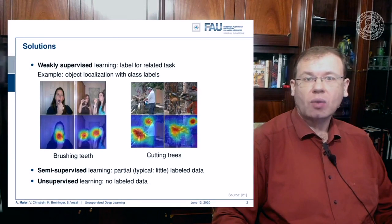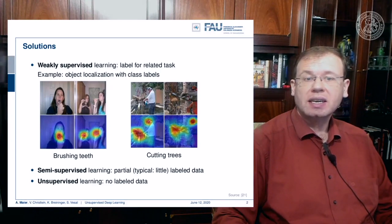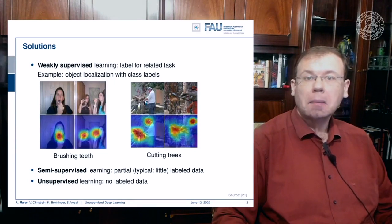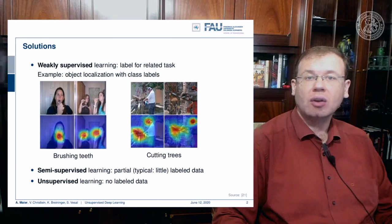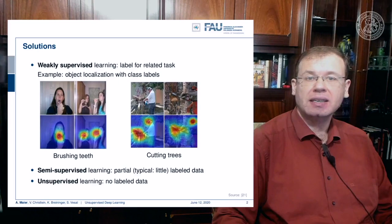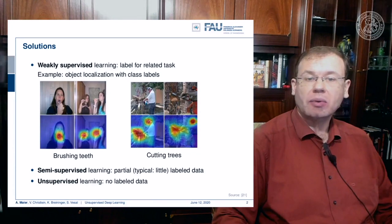It would be great if we had methods that could work with very few annotations or even no annotations. One trend is weakly supervised learning, where you have a label for a related task. The example shown here is localization from the class label: if you have images with classes like 'brushing teeth' or 'cutting trees,' you can use these plus associated gradient information like attention mechanisms to localize the class in that particular image.